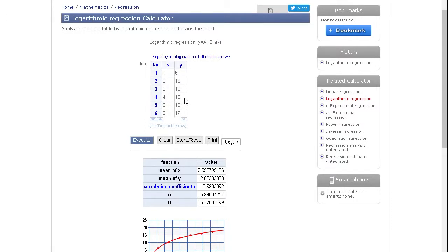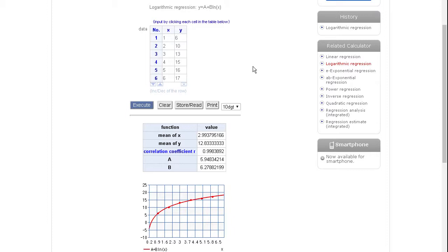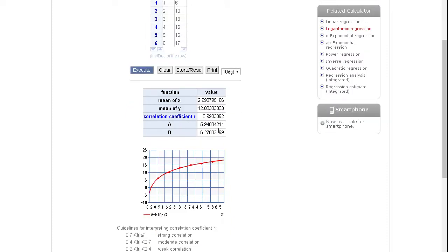I took this data in this table, plotted it using an online tool: one, six, two, ten, three, thirteen, four, fifteen, five, sixteen, six, seventeen, and did a logarithmic regression of the form Y equals A plus B LNX, which is the same thing you'll have on your TI-83s. When you perform the regression, you'll get this data.